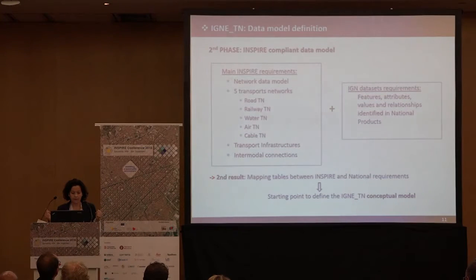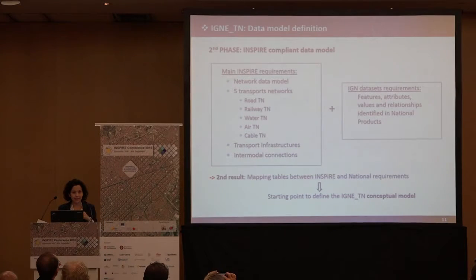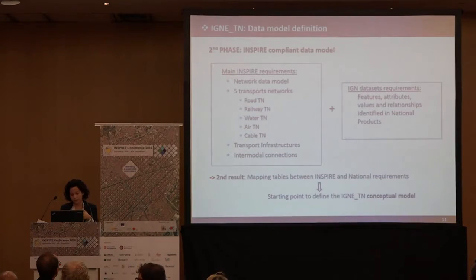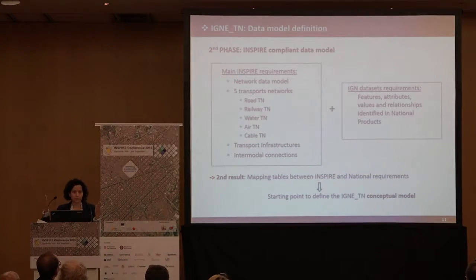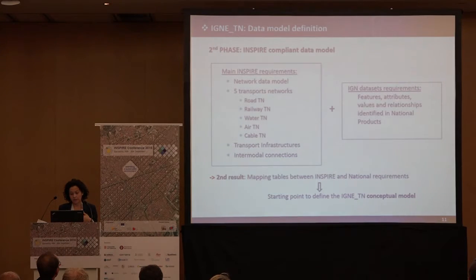We have to take into account the five transport modes — so it's huge. Also, the infrastructure has to be linked to the network, because we have information of the transport infrastructure, but from a cartography point of view, not connected to the network. And finally, the most difficult requirement to fulfil is intermodal connection — we don't have any product or information regarding that. Comparing these requirements with our dataset requirements, we obtained the starting point to define our new transport conceptual model.